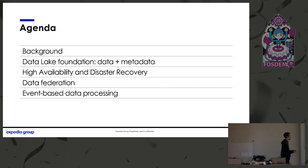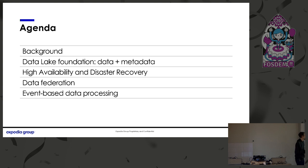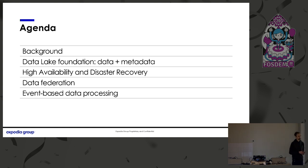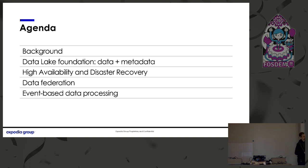The agenda for the talk today: I'll give a little bit of background about Expedia Group and how we're structured, because that has some impact on how we built our data lake. We'll talk about what we consider the foundation — how we store our data and the metadata. We'll talk about some options for high availability, disaster recovery, and redundancy. We'll look at options for federating access to your data at scale. And then we'll look at how we enable event-based data processing with a concrete use case.